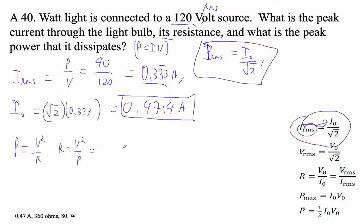All right, as long as we have RMS, we're good. And that is RMS. So it's going to be 120 squared divided by 40. 120 squared divided by 40 is equal to 360 ohms. And I could do that because this is the RMS voltage, and that is the average power.